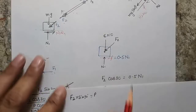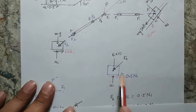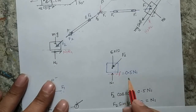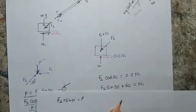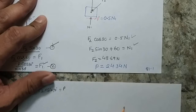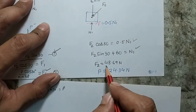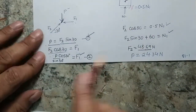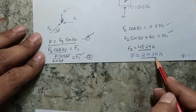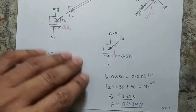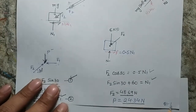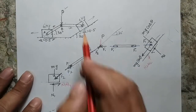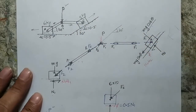Let's start with the free body diagram of block A on the flat surface. The downward force is 6g, along with force F2, the normal reaction, and frictional force. Balancing horizontal and vertical forces, F2 comes out to 48.69 N. Substituting this F2 into the equilibrium equation gives P = 24.34 N. But we cannot stop here — this may not be the final answer.